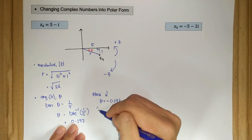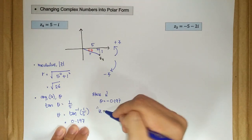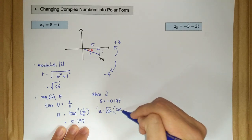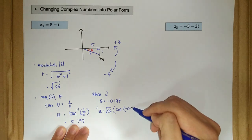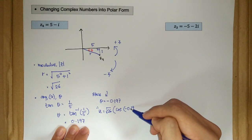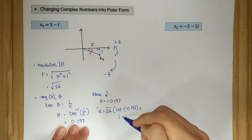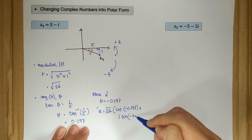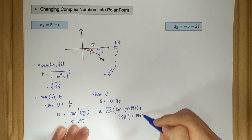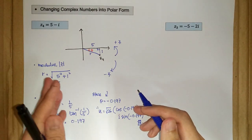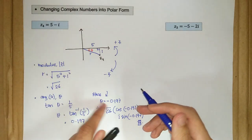So our polar form should be square root of 26 times cosine of negative 0.197 plus i sine of negative 0.197. So this is our first example here.